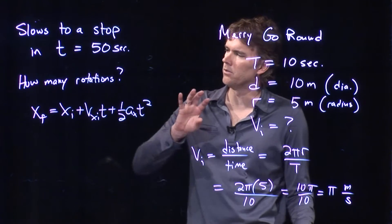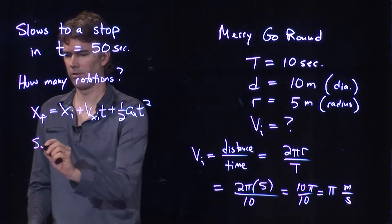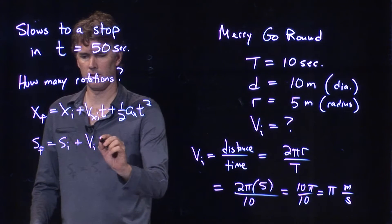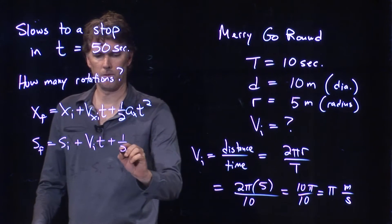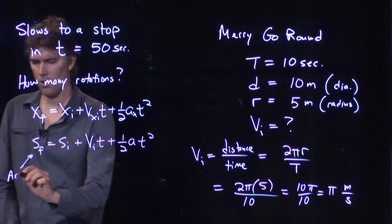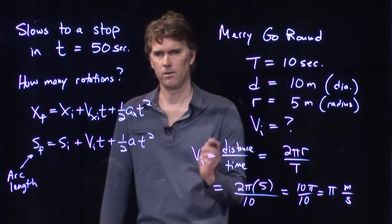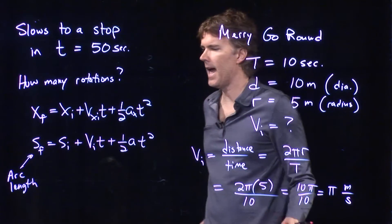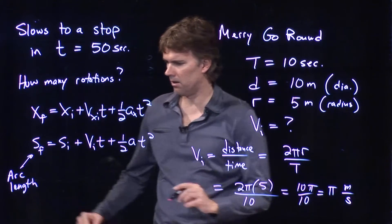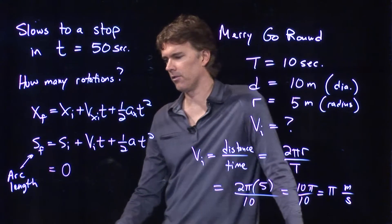And this is going to be the arc length. How far around have we gone? What is our distance around the edge that we've gone? What do we know here? Well, we can measure from where we started, and so we say that's 0.